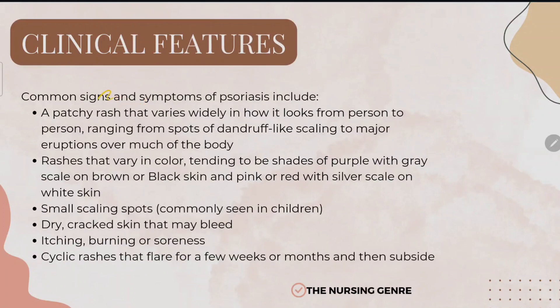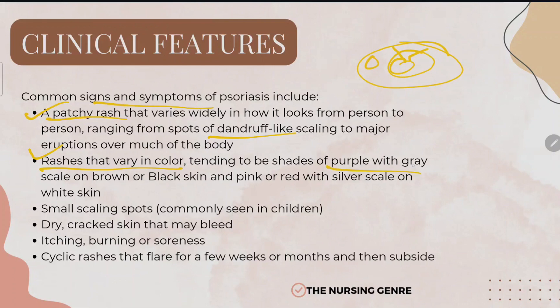Common clinical features include a patchy rash that varies widely from person to person, ranging from spots of dandruff-like scaling to major eruptions over much of the body. The rash varies in color — on brown or black skin, it appears purple or gray, while on white skin, it appears pink or reddish.